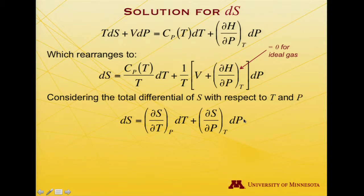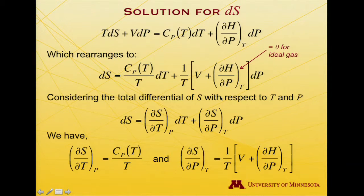Again, I'll take the total differential with respect to T and P, and that allows me to equate this term with this term. They both multiply dT in an expression for dS. So the partial derivative of S with respect to T at constant pressure is the heat capacity at constant pressure over T, and then this is the pressure dependence of entropy.